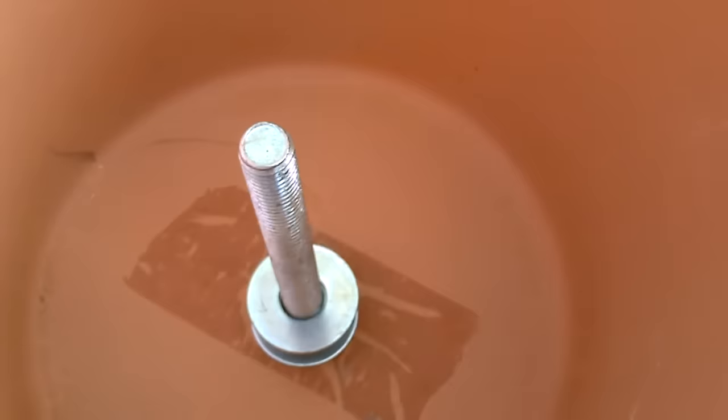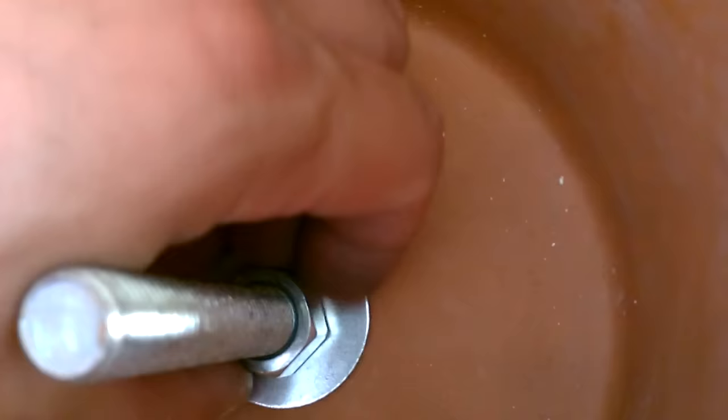Then all you do, drop another washer on there like that. Grab the second pot, set it on there evenly, and the hex bolt, just like that. Tighten it up good, but don't over tighten. You don't want to break the pot or anything.